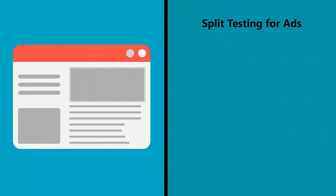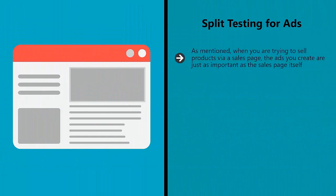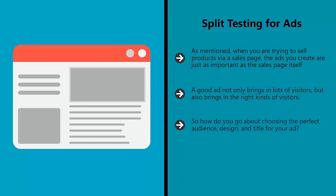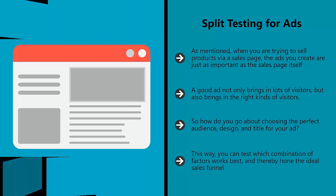Split testing for ads. As mentioned, when you are trying to sell products via a sales page, the ads you create are just as important as the sales page itself. In other words, you need to make sure that when someone lands on your page they are going to find something that interests them. A good ad not only brings in a lot of visitors but also brings in the right kinds of visitors. So how do you go about choosing the perfect audience, design, and title for your ad? One answer is to use something called AdWords Experiments, which are offered by Google itself by default. This way, you can test which combination of factors works best and thereby hone the ideal sales funnel.